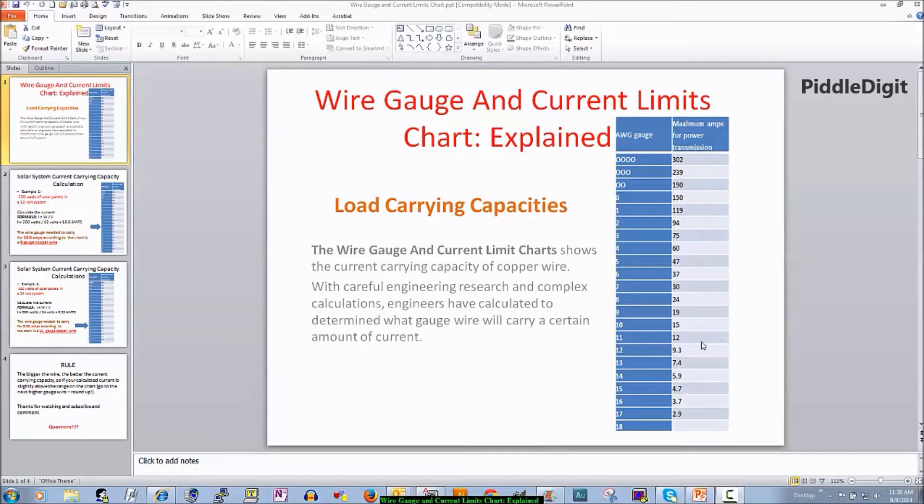Well here we are. This is the chart right here I was referring to. This is the wire gauge and current limits chart. Looking at the chart you can see the AWG gauge and the maximum amps for power transmission. You can of course do a print screen or pause the video and make a copy of this chart right here. So this is the chart that we are going to reference to get what wire gauge we need to use after we have calculated the current of our solar system.